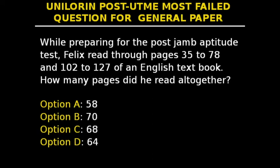This is another question from the most failed JAMB aptitude test — Question 11 in our series. While preparing for the post-JAMB aptitude test, Felix read through pages 35 to 78 and 102 to 127 of an English textbook. How many pages did he read altogether? We have options A to D: 58, 70, 68, and 54.